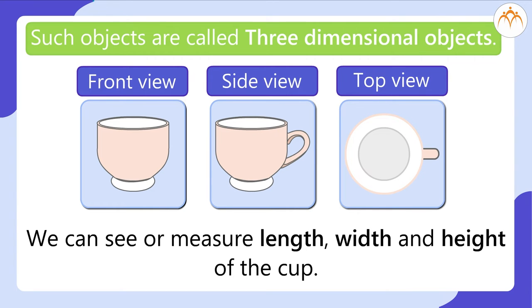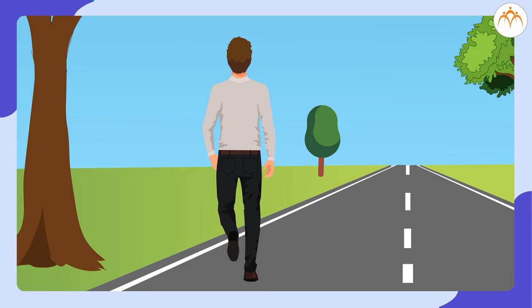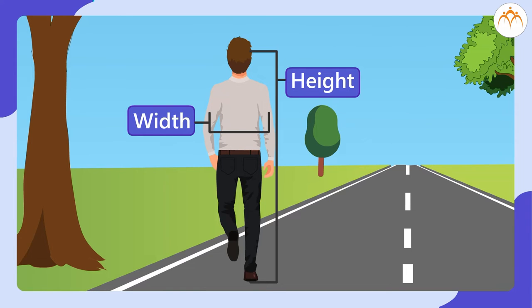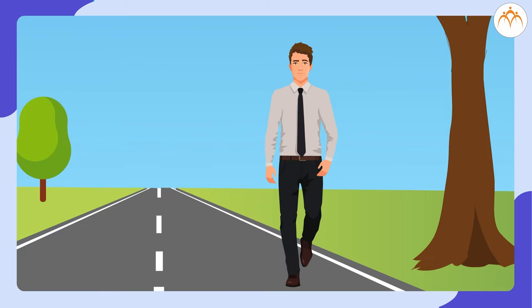Such objects are called three-dimensional objects. Suppose you are walking on a road. A person behind you will see your back. He can guess fairly well your height and whether you are thin or stout or normal. That is your width. From the front side many more features will be seen. He may even recognize you.